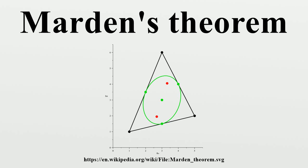Statement of the theorem: a cubic polynomial has three zeros in the complex number plane, which in general form a triangle, and the Gauss-Lucas theorem states that the roots of its derivative lie within this triangle. Marden's theorem states their location within this triangle more precisely.